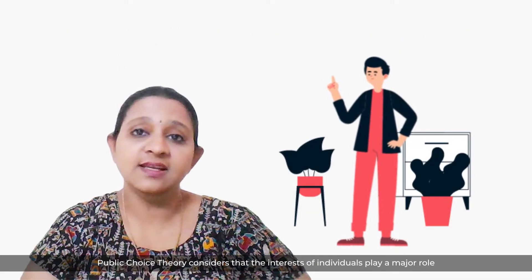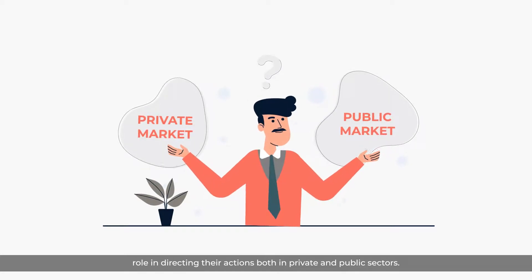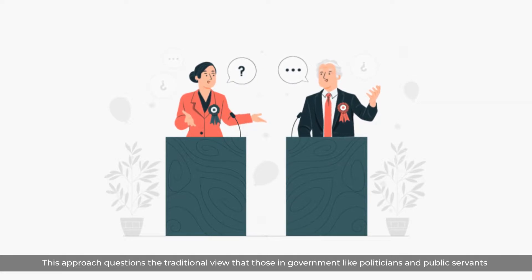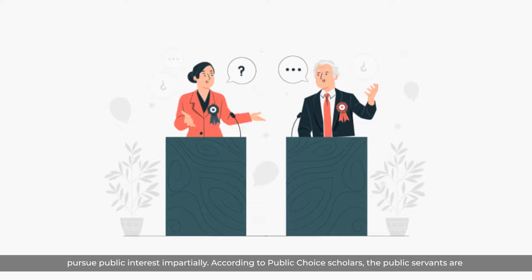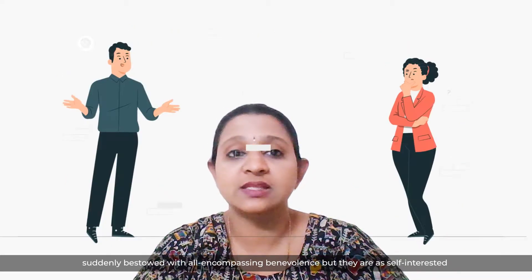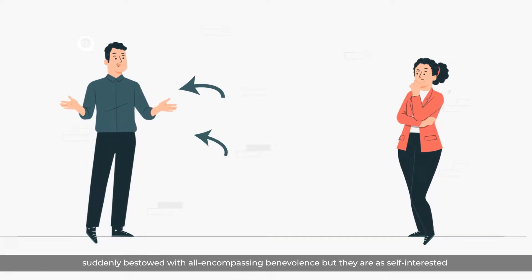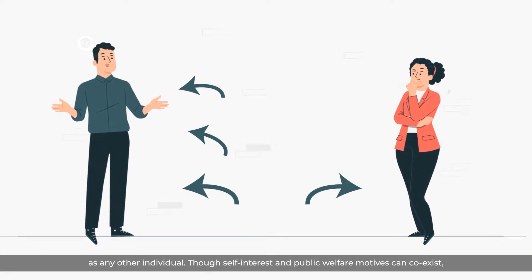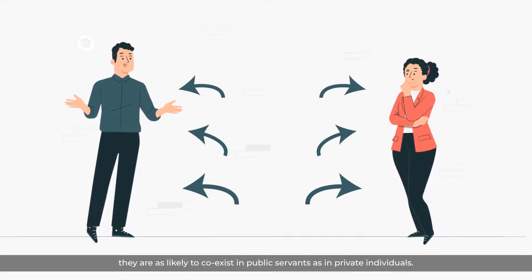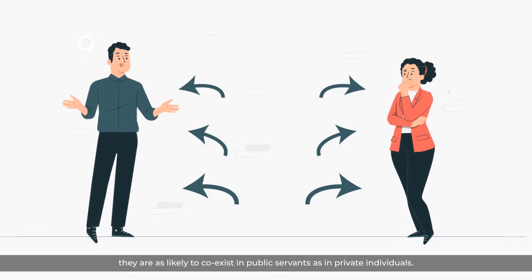Public choice theory considers that the interests of individuals play a major role in directing their actions both in the private and public sectors. This approach questions the traditional view that those in the government, like politicians and public servants, pursue public interest impartially. According to public choice scholars, public servants are not suddenly bestowed with all-encompassing benevolence, but are as self-interested as any other individual. Though self-interest and public welfare motives can coexist, they are as likely to coexist in public servants as in private individuals.